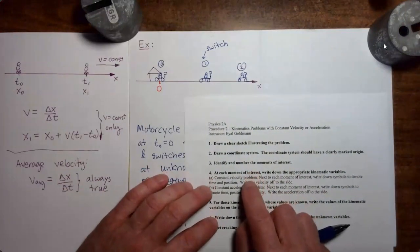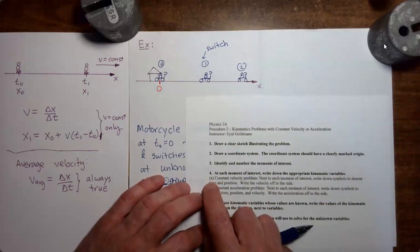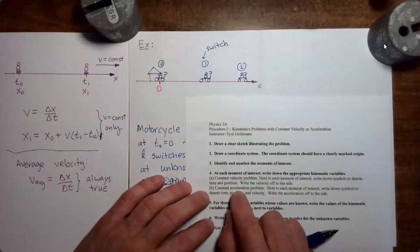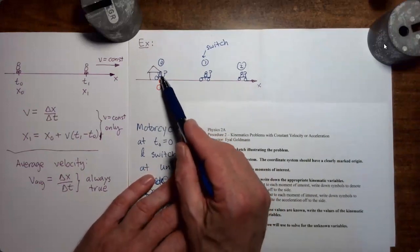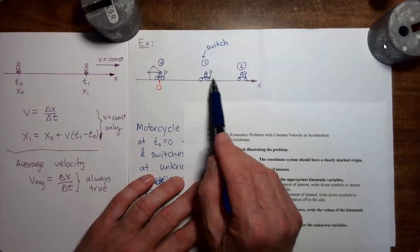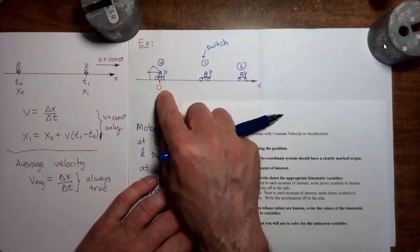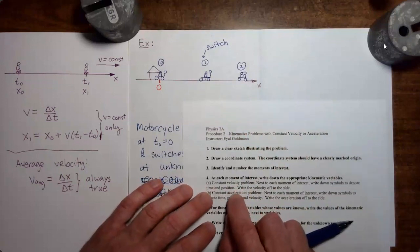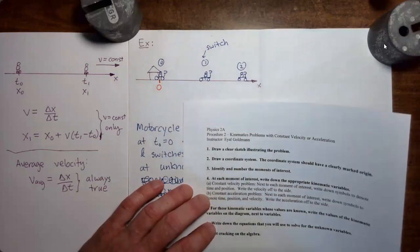That was step three. Now we have step four: at each moment of interest, write down the appropriate kinematic variables. We have option A for constant velocity and option B for constant acceleration. We haven't learned about acceleration yet. This isn't exactly a constant velocity problem, because we have one constant velocity from moment zero to moment one, and a different constant velocity from moment one to moment two — so it's piecewise constant. Next to each moment of interest, write down symbols to denote time and position, and write the velocity off to the side.